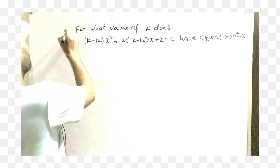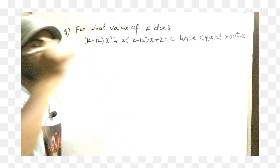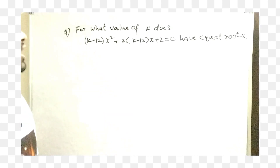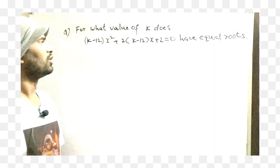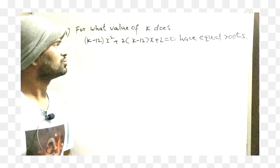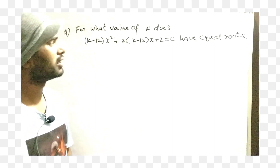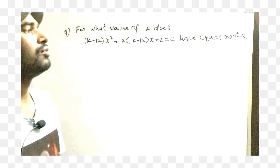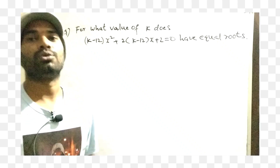Our question: for what value of k does (k minus 12)x squared plus 2 into (k minus 12)x plus 2 equal to 0 have equal roots?